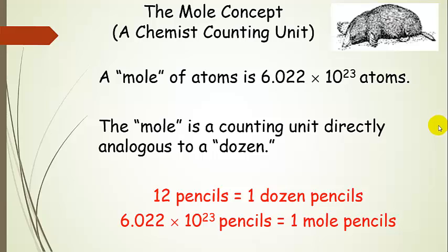This leads us to the mole concept, which is basically just a chemist's counting unit. A mole of atoms is 6.022 times 10 to the 23 of them. A mole is basically a counting unit directly analogous to a dozen. We would say I have a dozen donuts, a dozen pencils, a dozen eyeballs, or whatever, and we know that means 12.